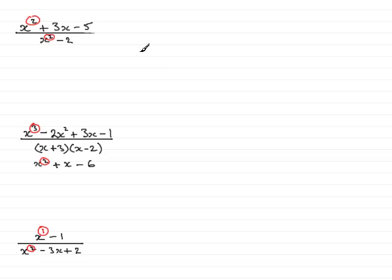Now, what makes an improper fraction then? An improper fraction is defined as where the degree of the numerator, the top of the fraction, is more than or equal to the degree of the bottom of the fraction, the denominator.